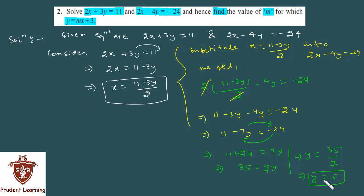Now, substituting the value of y here, we will get x. x is equal to 11 minus 3 times of y is 5 over 2, which gives us x as 11 minus 15 over 2, which gives us x as 11 minus 15 is minus 4 upon 2 which is equal to minus 2.